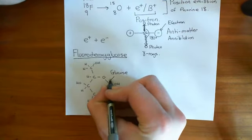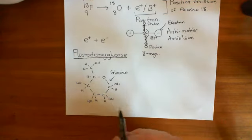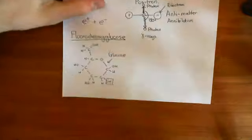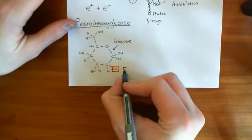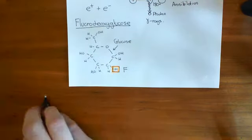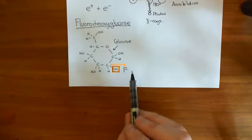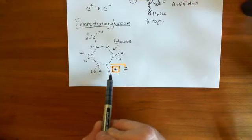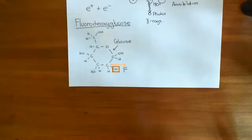So this is glucose. To create fluorodeoxyglucose, we remove this hydroxyl group and replace it with a fluorine atom. This hydroxyl group here is removed and we replace it with a fluorine atom. Fluorine only needs one bond, so it binds to that carbon and it is saturated. That is fluorodeoxyglucose. The reason it's called fluorodeoxyglucose and not just fluoroglucose is that you've removed the hydroxyl group containing that oxygen — so it's deoxy — and you've added a fluorine group.